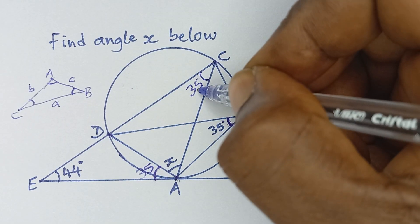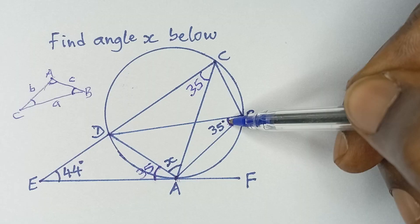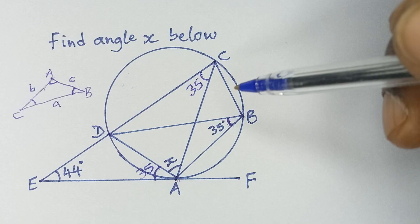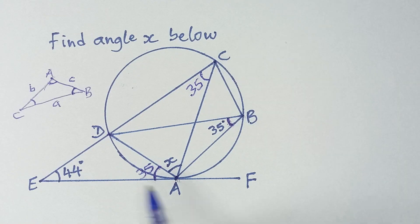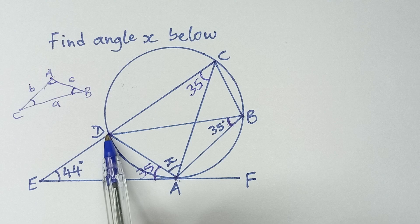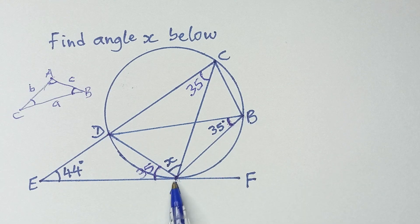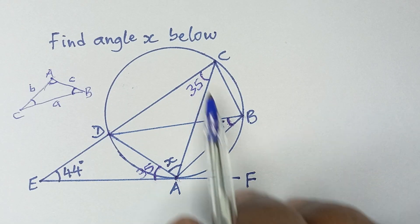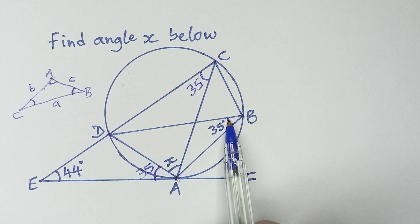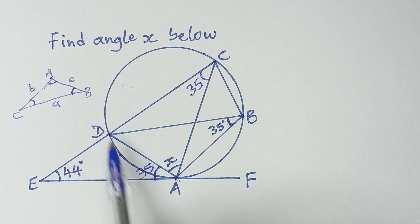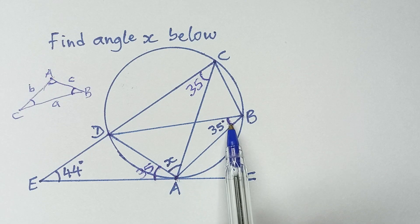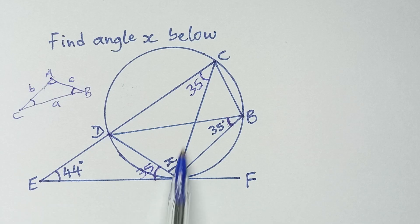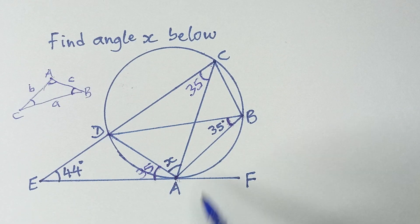Because both pairs of lines come from the same two points A and D and meet the circumference at different points, the angles they form are equal — they are angles in the same segment. So this angle at C is also 35°.